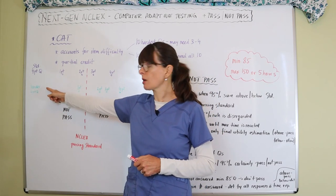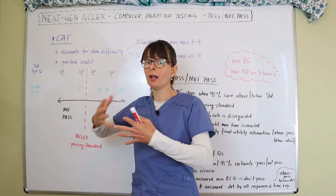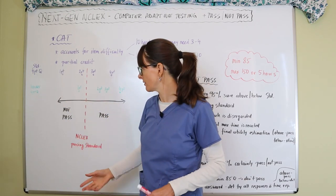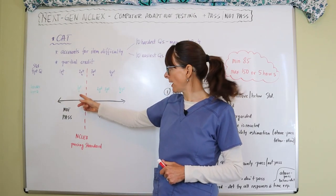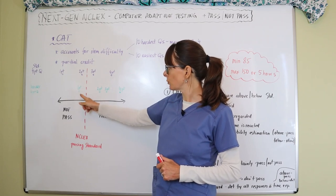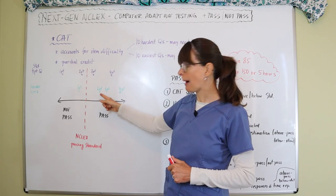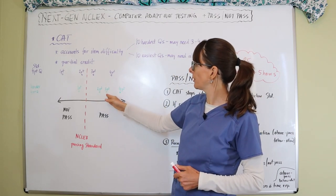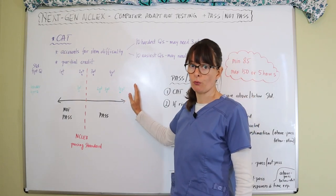But if the question is harder—because you've been doing well and it's giving you harder questions—if you only get one point out of four, you're in the not passing section but really close to that standard line. Two points means you're passing. Three points puts you even higher on this continuum, and four points puts you way over here.